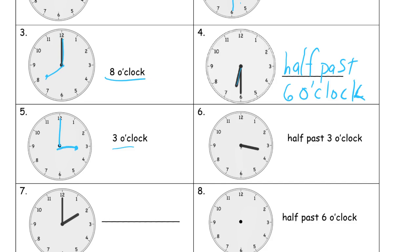Half past 3 o'clock — you can see the hour hand is between the 3 and the 4, which is halfway after 3 on its way to 4, right in the middle. For the minute hand, remember half of the clock face means we go down to the 6. The minute hand should be long, starting at the number and going straight up to the middle. That's half past 3 o'clock.